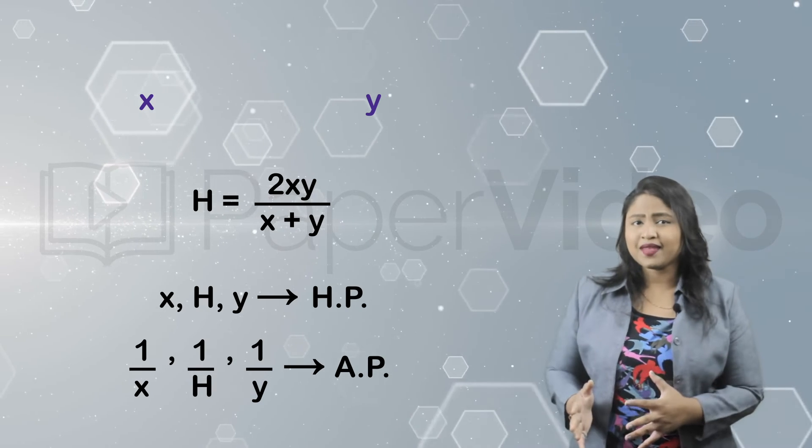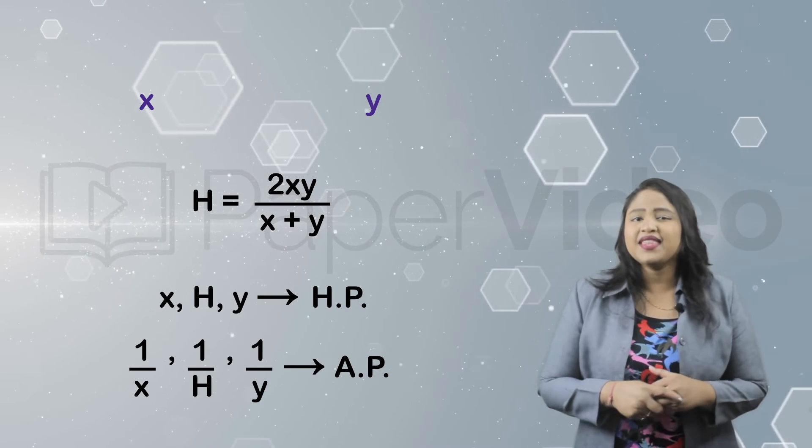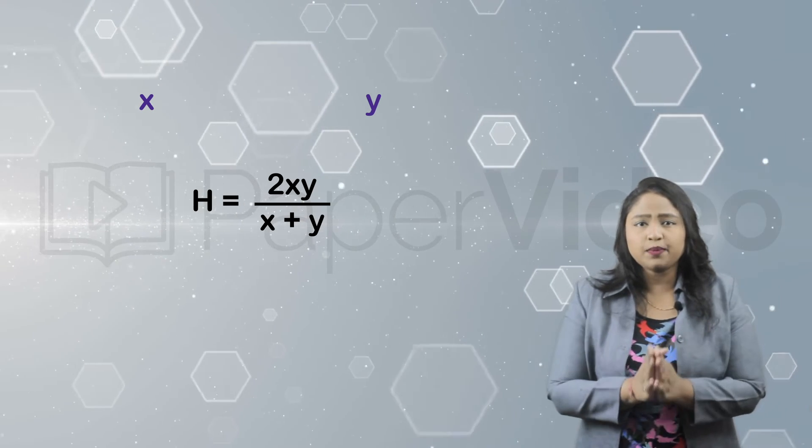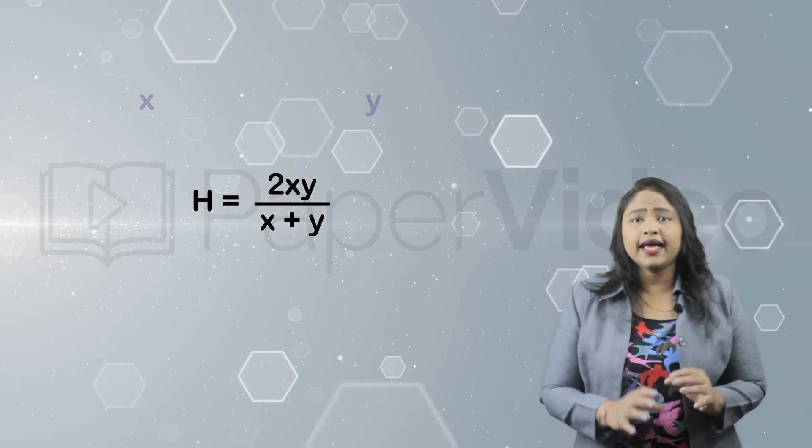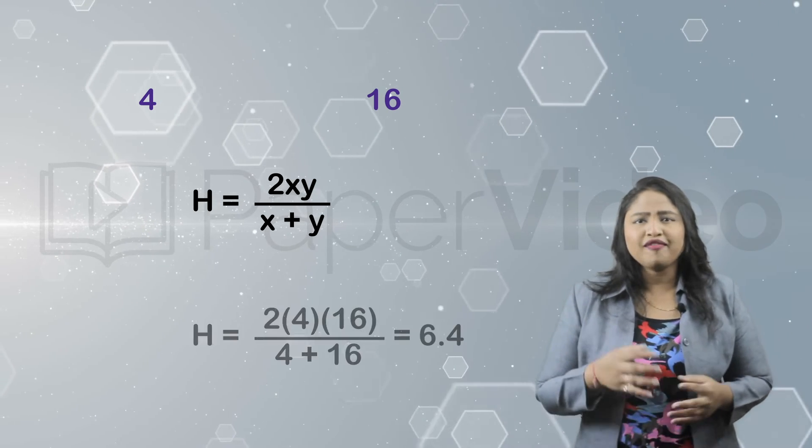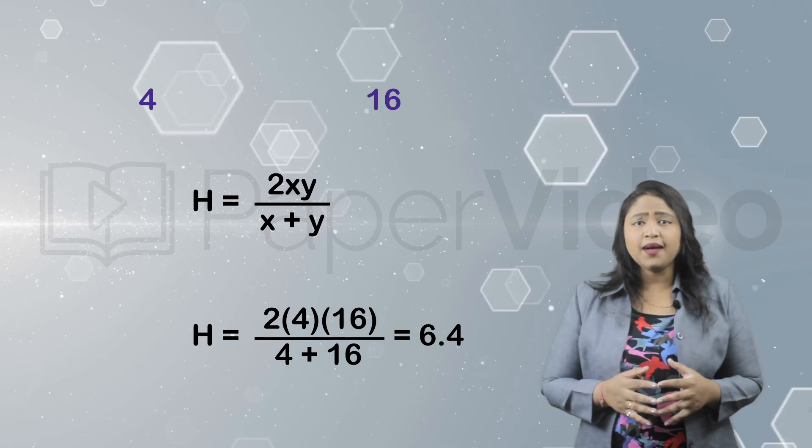Let's understand this concept with the help of an example. Suppose we need to find the harmonic mean of two numbers like 4 and 16. Plugging in the values of x and y into the formula, we get H = 2(4)(16)/(4 + 16).